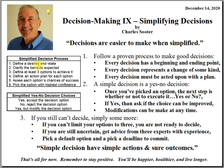First step: define a desired end state. This is a goal, something off in the future that you're aiming for. Second, clarify the benefits expected. Third, define at least three options to achieve it. If you have more than three options and you can't narrow it down to three, you're not ready to make a decision yet.